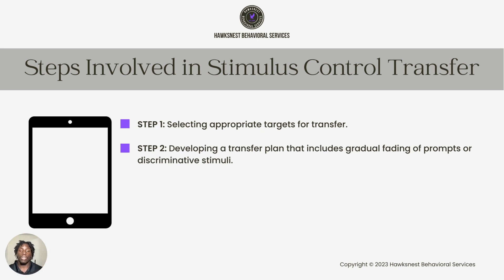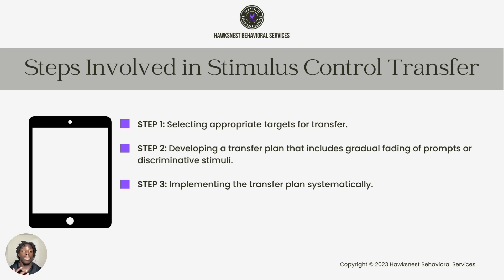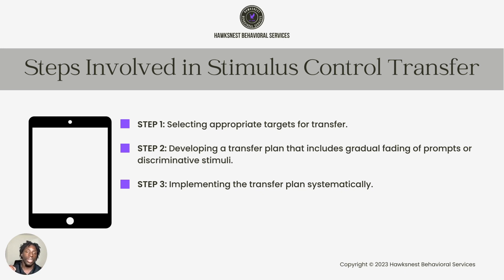Step three is to start implementing that transfer plan systematically. Your behavior analyst will create the transfer plan and discuss with you what it will look like — what skills your learner has acquired and what it looks like to transfer stimulus control from the discriminative stimulus we've been using to something more natural, something occurring in the environment that will act as that cue as opposed to whatever we were using before.